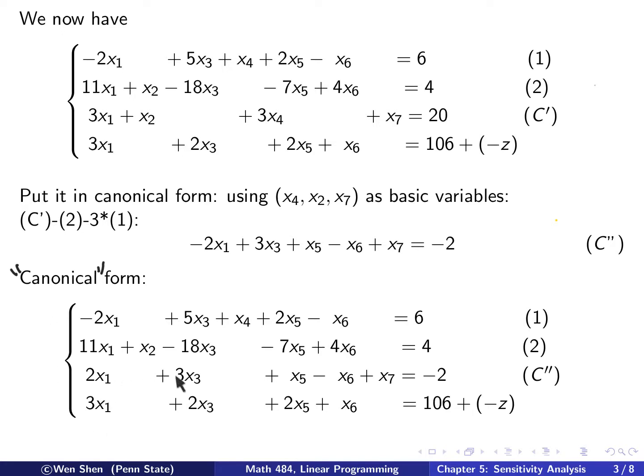We write this one in as the final computation result here. And now we see that this is in the canonical form in the quotation sign. That is, the left-hand side is in canonical form with basic variable X4, X2, X7. But then now the right-hand side, the B vector here, contains some elements that's negative. And the objective function is the same.